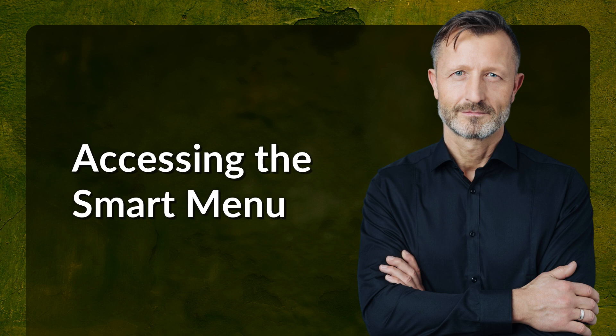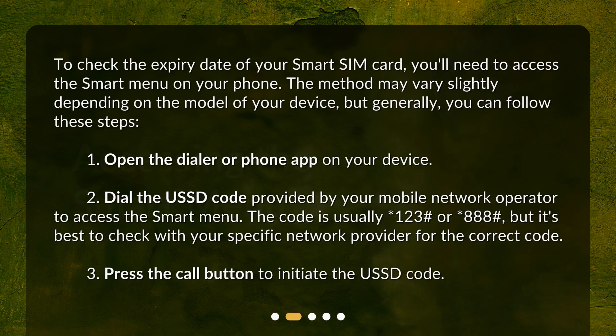Accessing the Smart Menu. To check the expiry date of your Smart SIM card, you'll need to access the smart menu on your phone. The method may vary slightly depending on the model of your device, but generally you can follow these steps. First, open the dialer or phone app on your device.